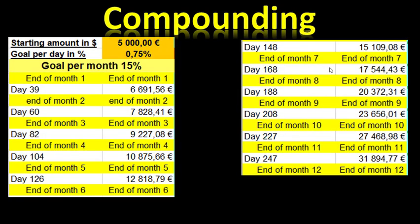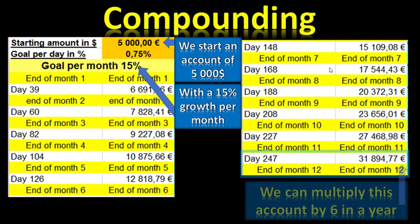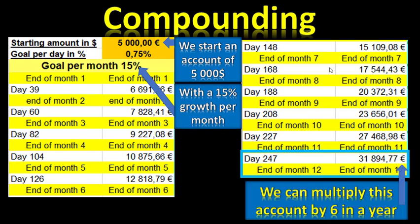If you master your trading skills and make 15 percent per month, starting with a five thousand dollar account with 15 percent monthly growth you can multiply the account by six in one year. After one month you get six thousand six hundred; after two months seven thousand eight hundred; after six months fifteen thousand — tripling your account in six months. Continuing at this rate for 12 months, your five thousand dollar account will finish at 31,000 dollars — six times what you started with in one year.